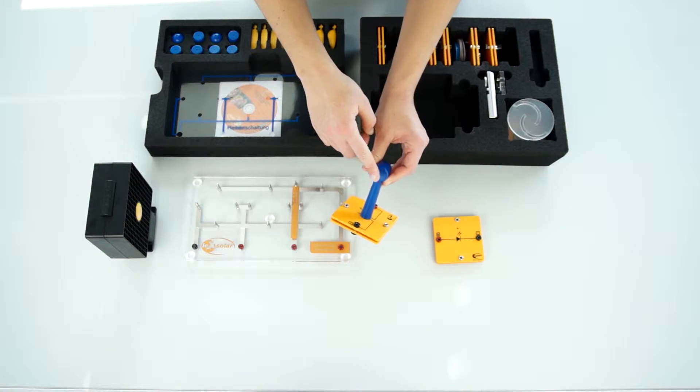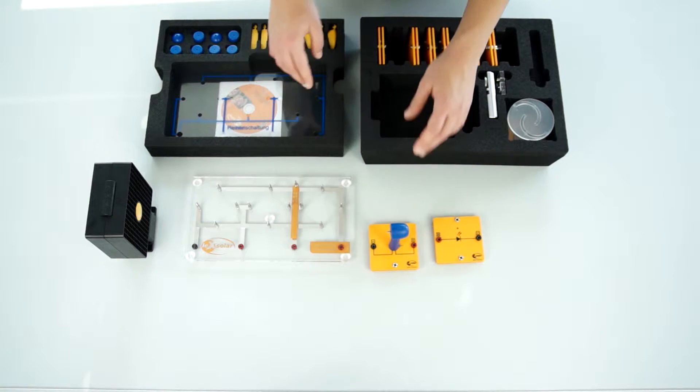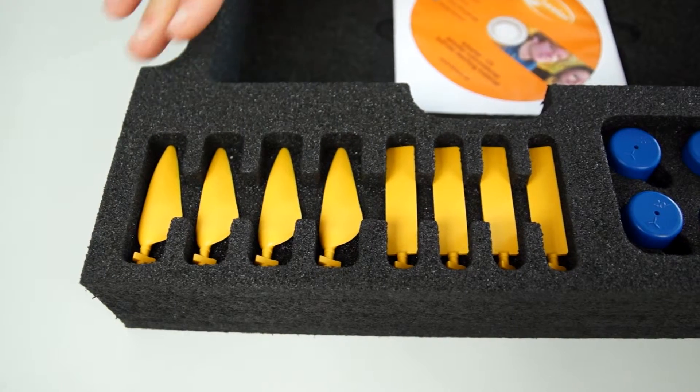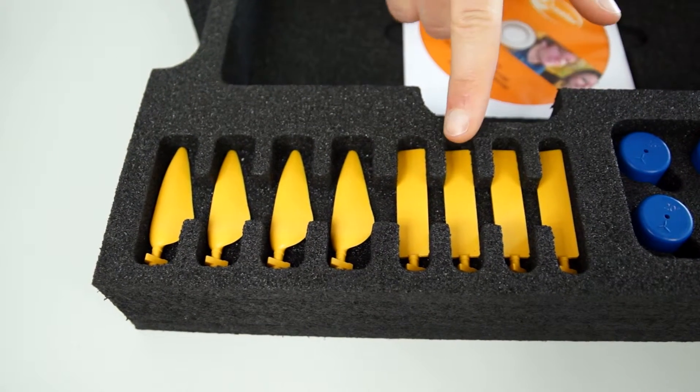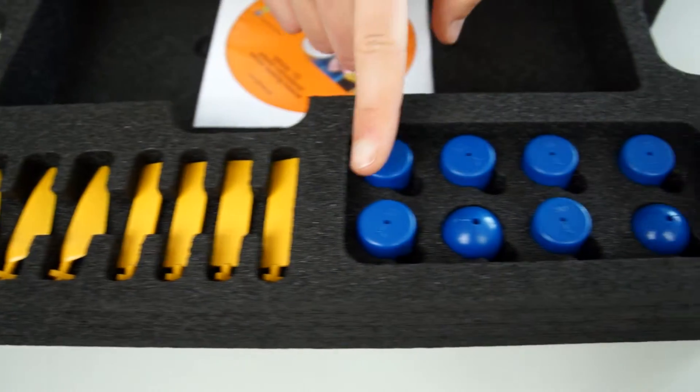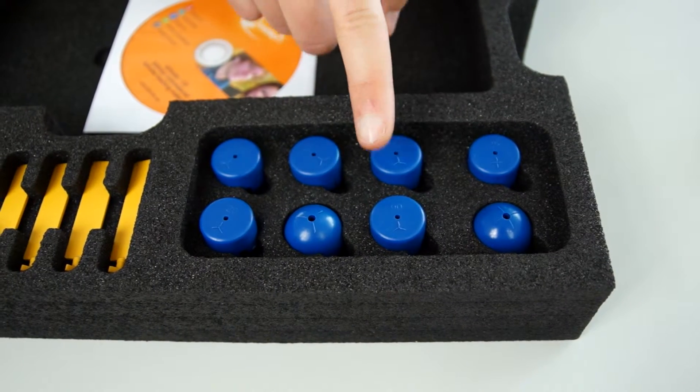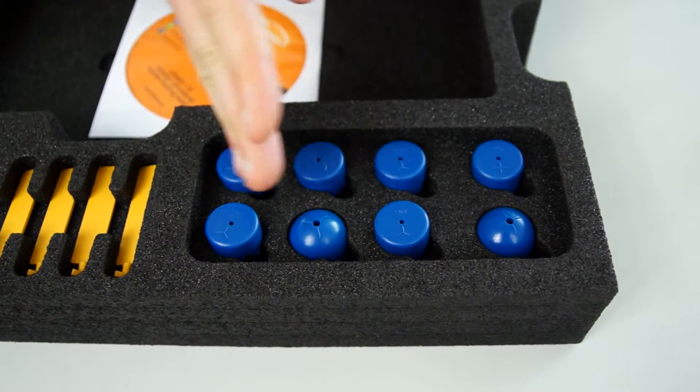In order to complete the wind turbine we of course need the rotor blades. Here we have a large number of various options. So we can choose for example between a flat blade profile and an optimized blade profile. The various hubs and caps let you vary the pitch angles of the rotor blades as well as the number of blades.